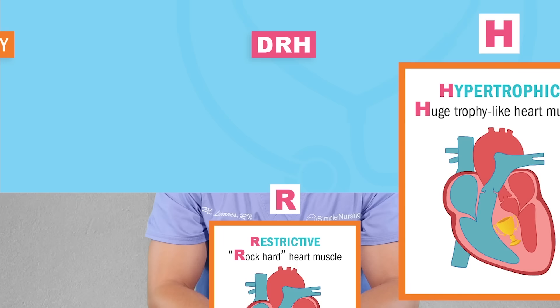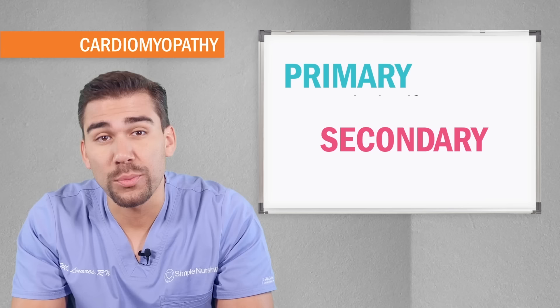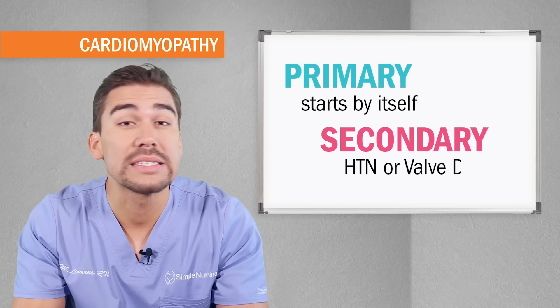Now there are two categories of cardiomyopathy: it's either primary or secondary. Primary develops all by itself, and secondary is usually caused by hypertension or some sort of valve disease.